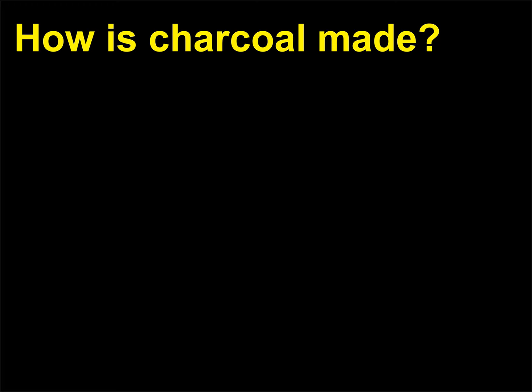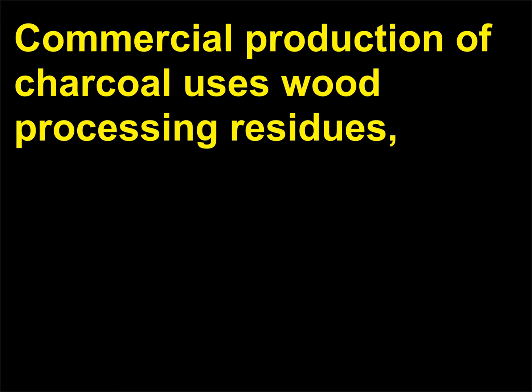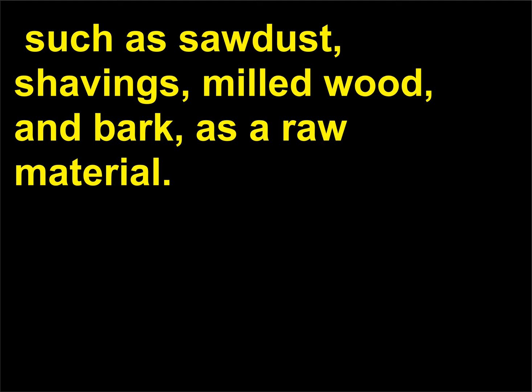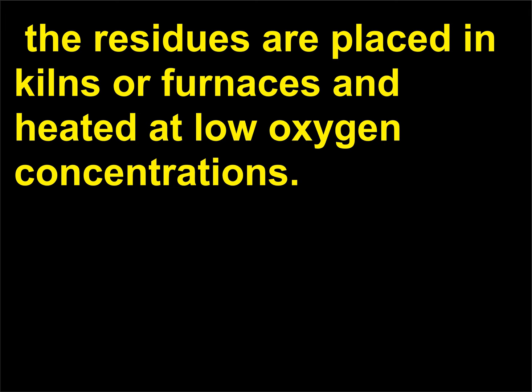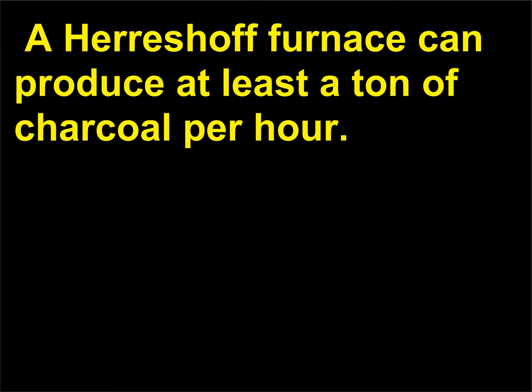How is charcoal made? Commercial production of charcoal uses wood processing residues such as sawdust, shavings, milled wood, and bark as a raw material. Depending on the material, the residues are placed in kilns or furnaces and heated at low oxygen concentrations. A Herreshoff furnace can produce at least a tonne of charcoal per hour.